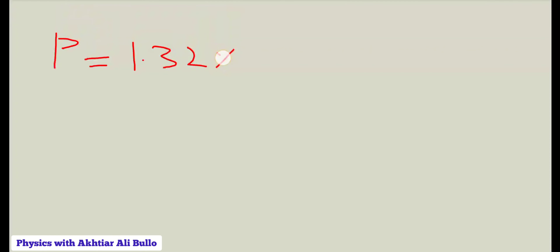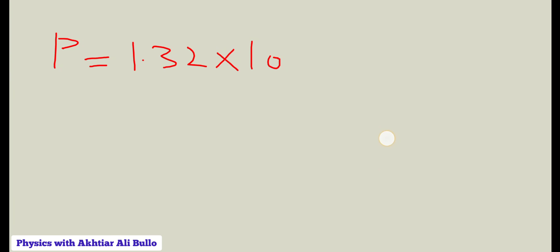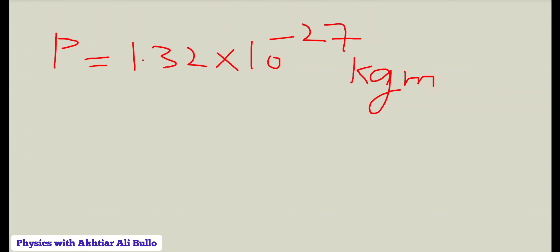So momentum P will be equal to 1.32 into 10 raised to the power minus 34 plus 7, which is minus 27. Therefore P = 1.32×10⁻²⁷ kg·m/s.